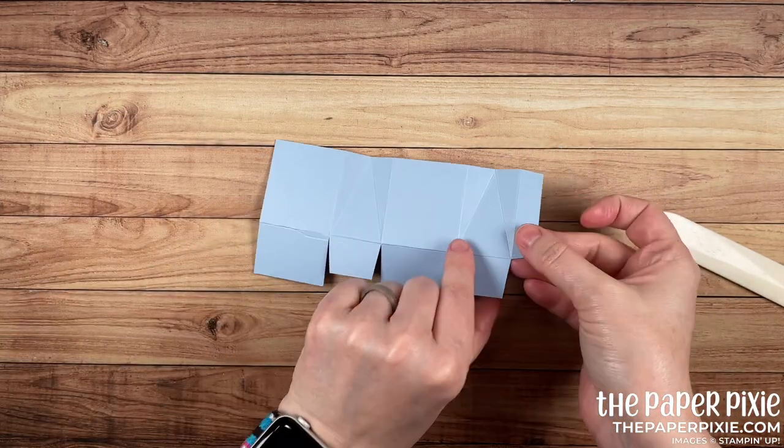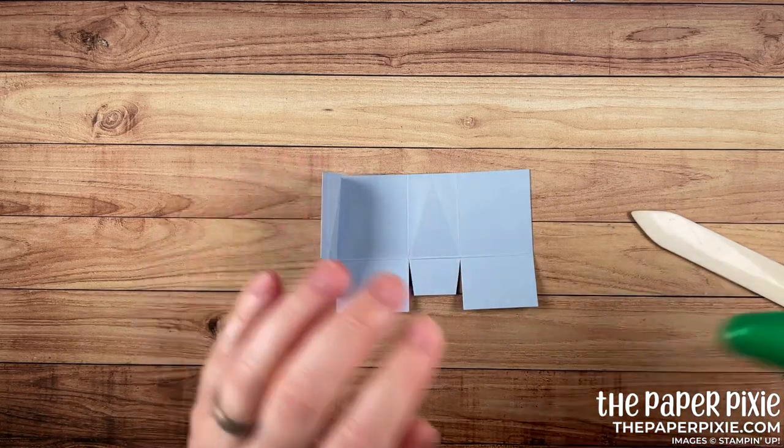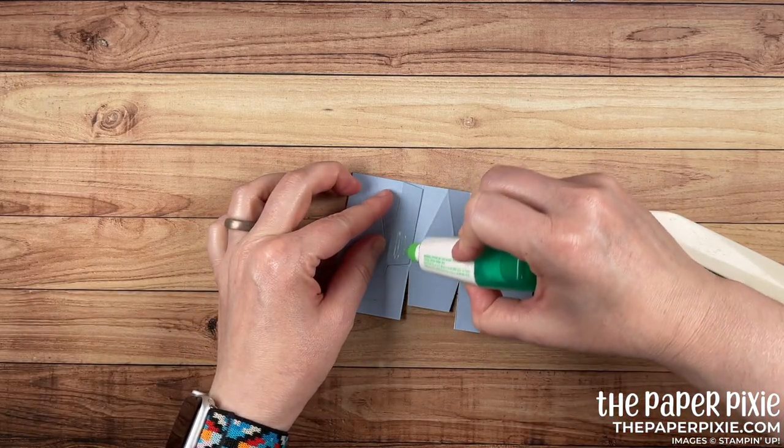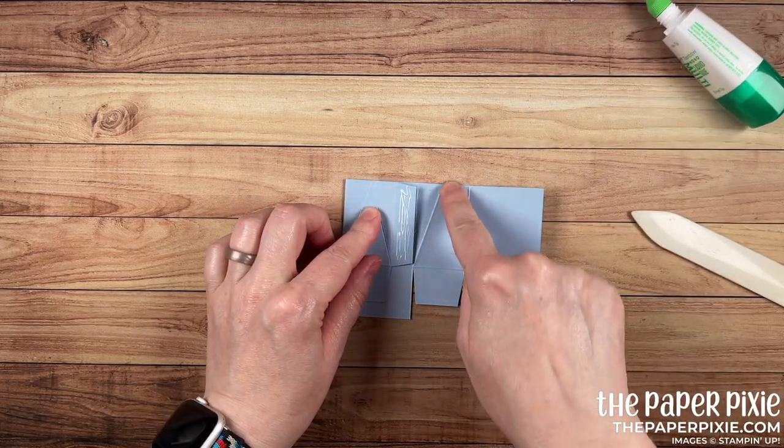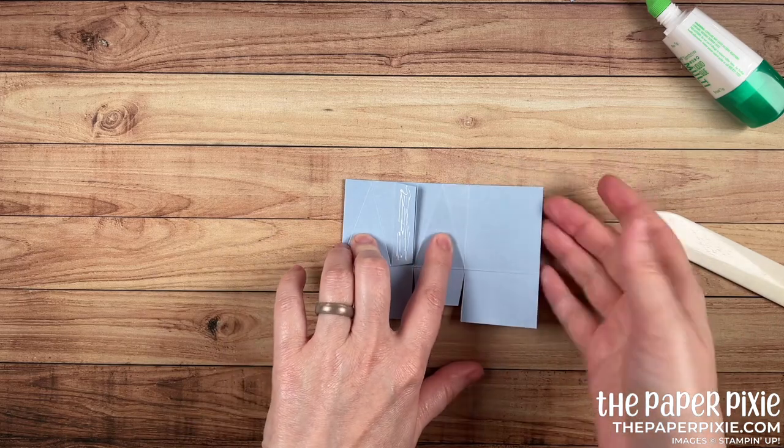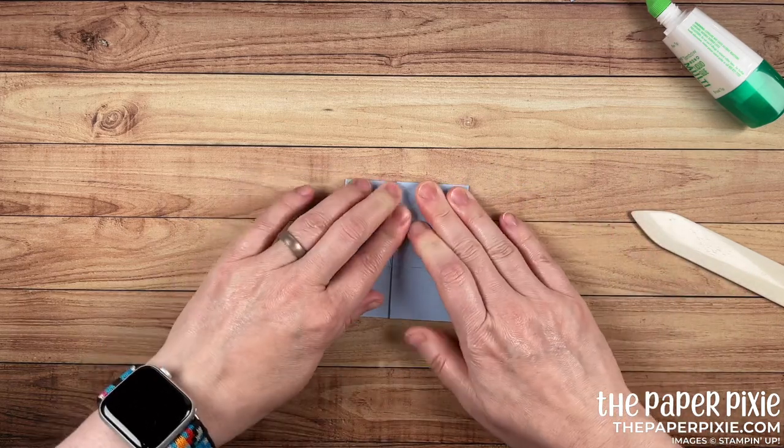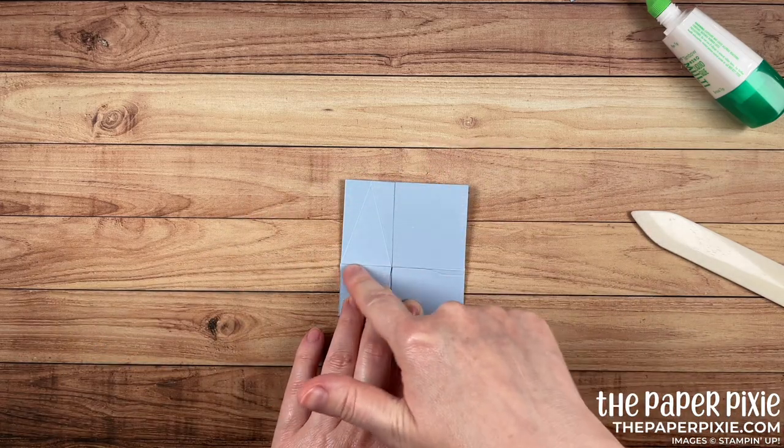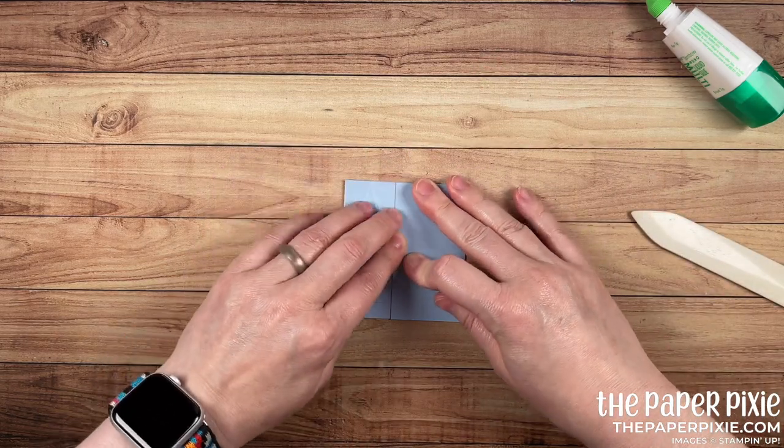Now we can put this together. I'm going to flip it over. I'm folding on the second score line from the left and using multi-purpose liquid glue. I'm going to apply glue to this little 1⁄2-inch tab. And because we've done these diagonal score lines and already burnished them, I'm going to fold on the first score line from the right, but I want to make sure that that paper is totally flat. We're lining up these horizontal score lines and this horizontal edge to make sure that those are all lined up right.